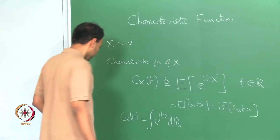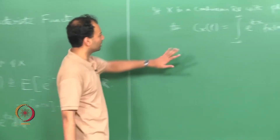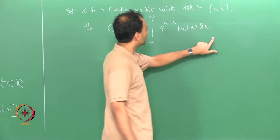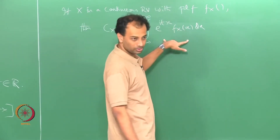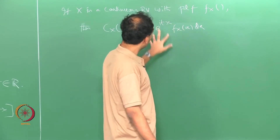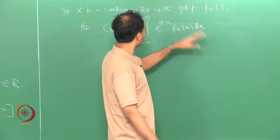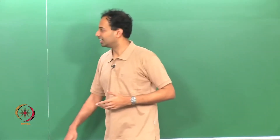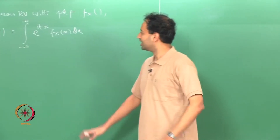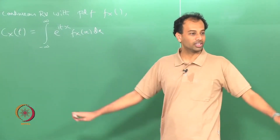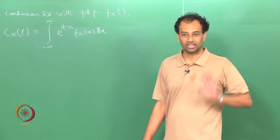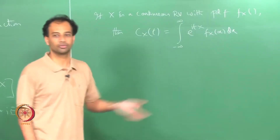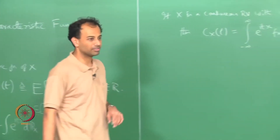The reason that is true is the following: for a continuous random variable, if you take the absolute value of this integral, you can bound it above by the integral of the absolute value. The absolute value of e^{itx} is 1, so the absolute value of c_x(t) is upper bounded by 1 always. This integral is therefore uniformly and absolutely convergent for all real t, so it is always well defined.